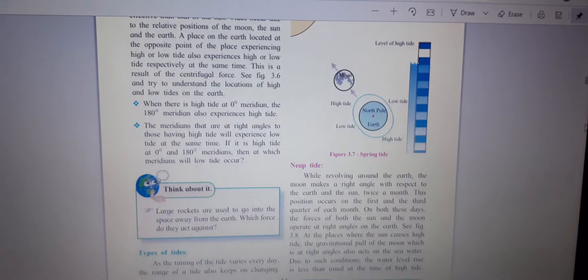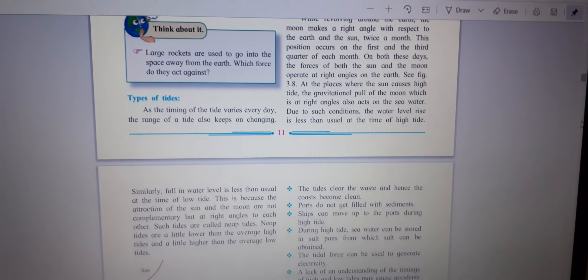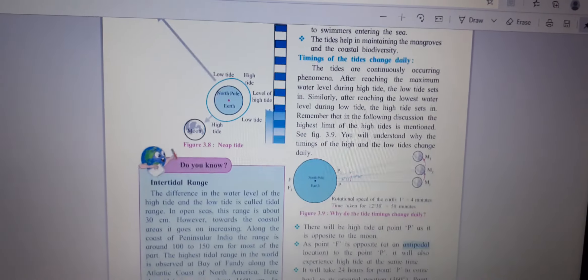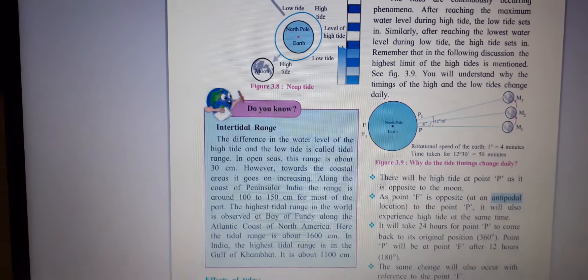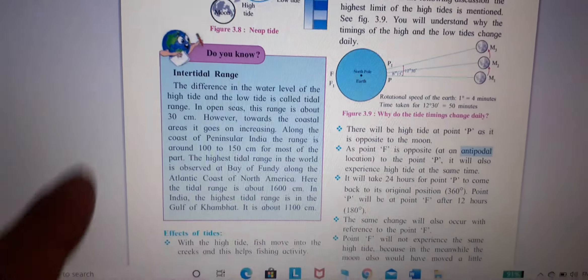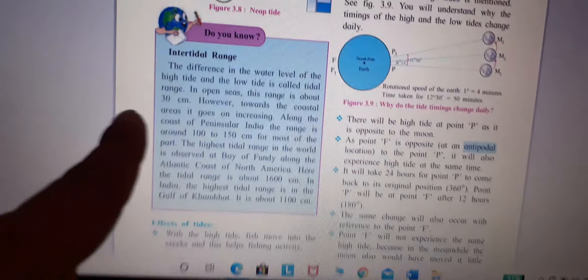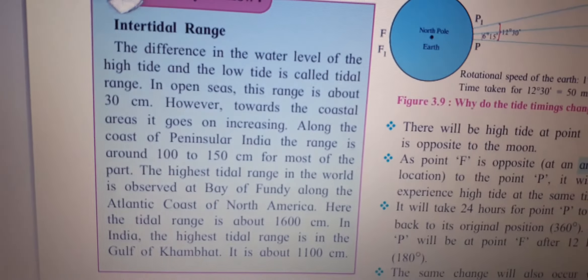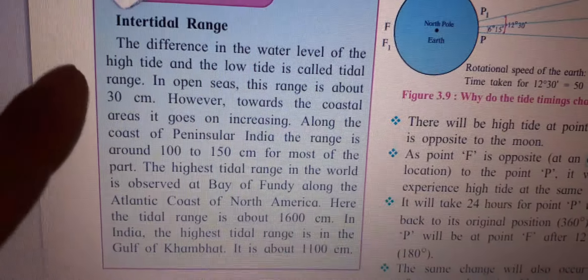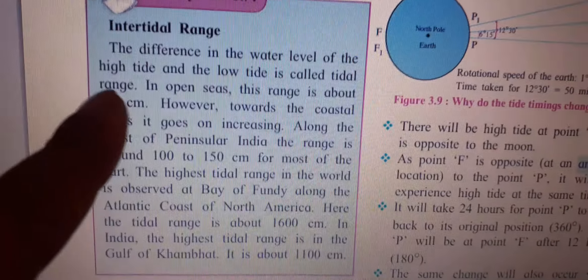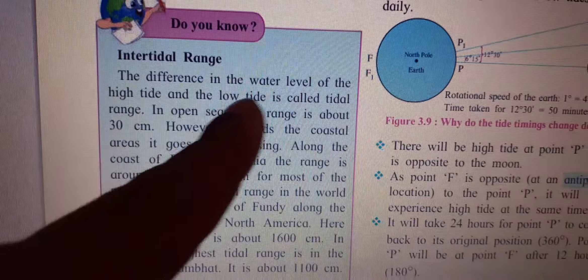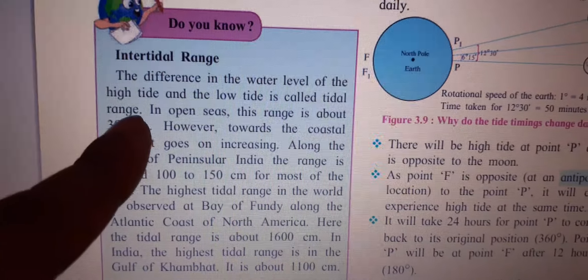Now we are going to understand a new concept, that is intertidal range. What is the intertidal range? The difference in water level of high tide and low tide is called tidal range.